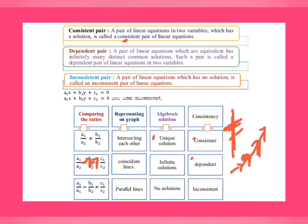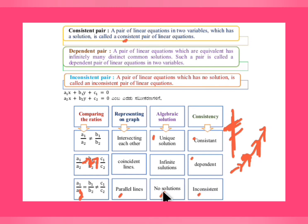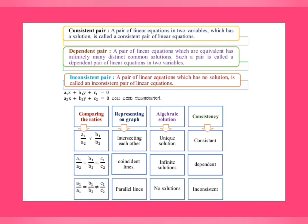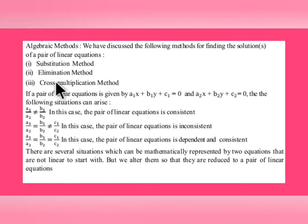For the third case: a1/a2 = b1/b2 but not equal to c1/c2. Only these two ratios are equal, so the lines are parallel — they have no solution. They are inconsistent. Remember: parallel lines have no solution and are inconsistent. This point is very very important.